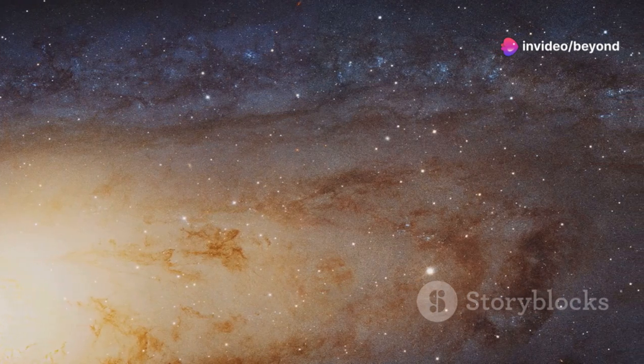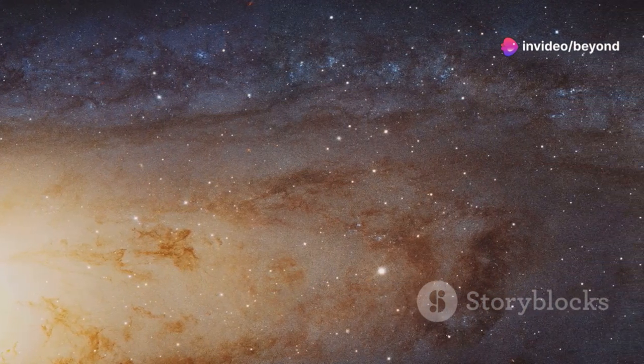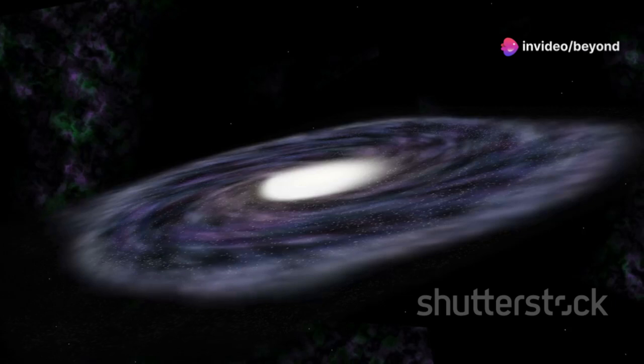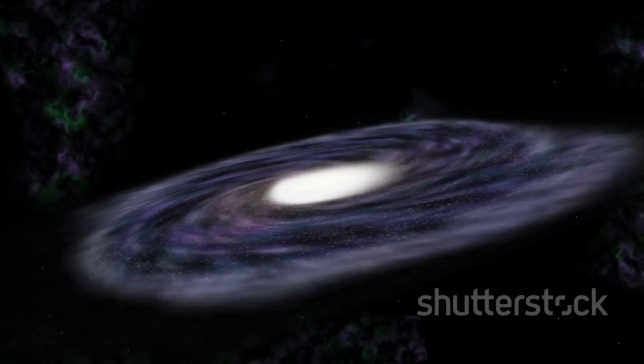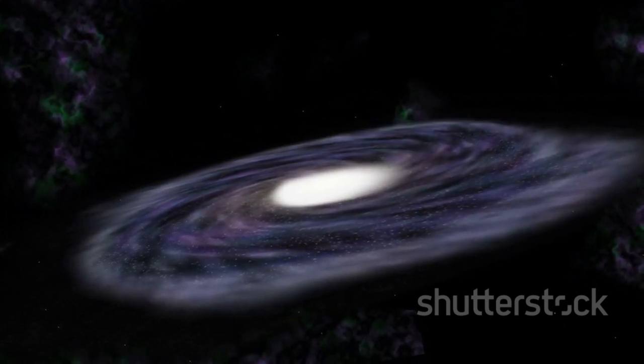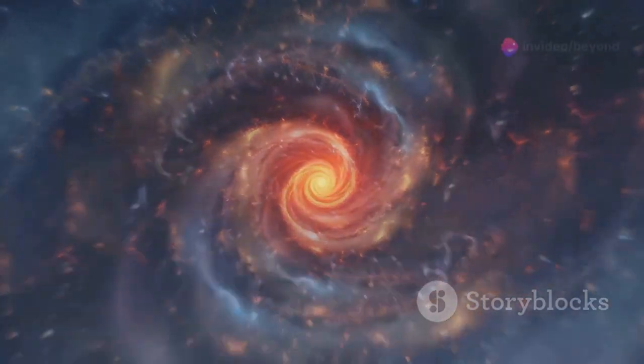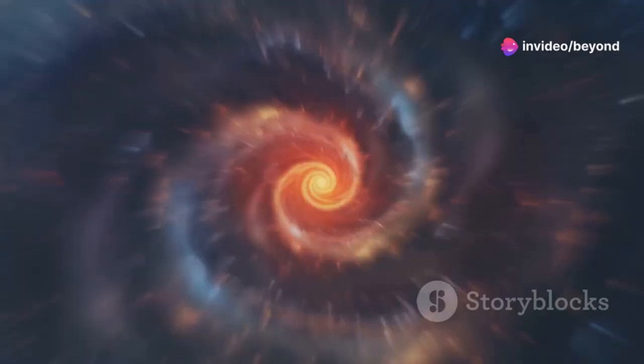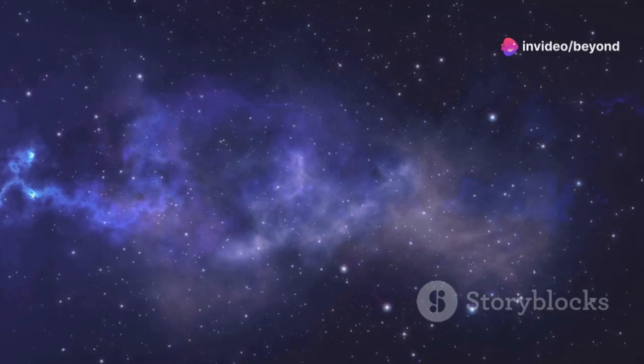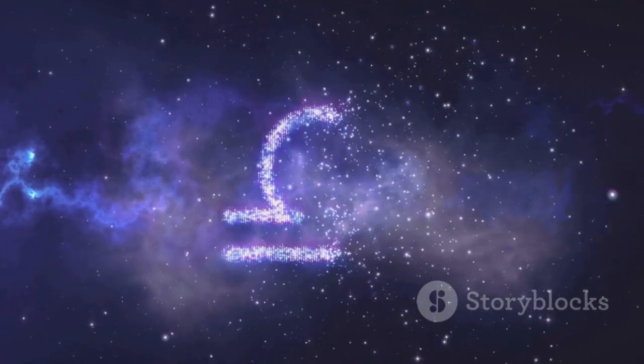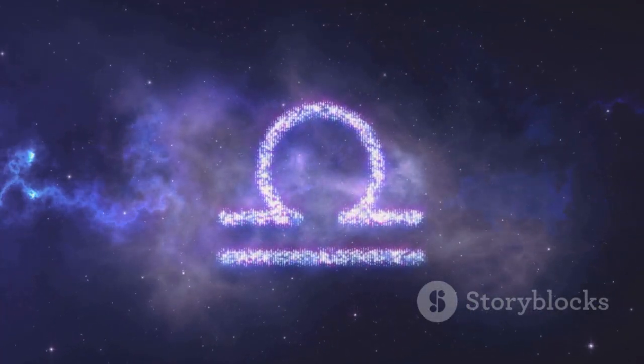Our own Milky Way galaxy is on a collision course with our nearest galactic neighbor, the Andromeda galaxy. In about 4 billion years, these two spiral galaxies will collide and merge, creating a giant elliptical galaxy. While such collisions are incredibly energetic events, they are not as catastrophic as they might seem. The distances between stars within galaxies are so vast that individual stars are unlikely to collide.